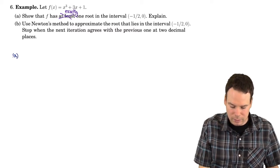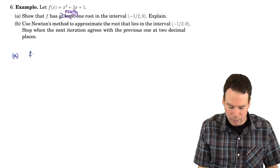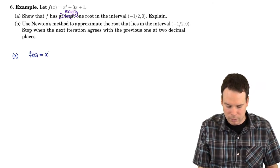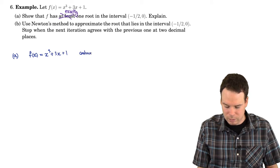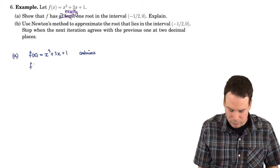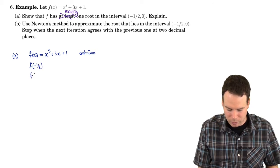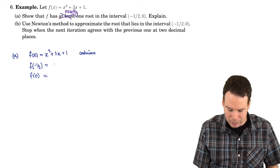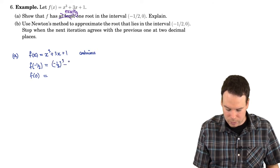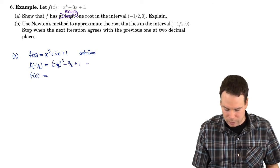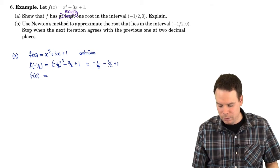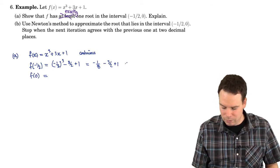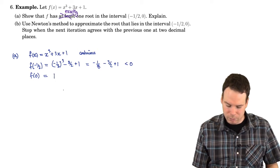So why do we know it has exactly one root in the interval? Well, the function is continuous, and let's look at the function value at the end points. I'm hoping that one of them is positive and one is negative, so I can conclude by the intermediate value theorem that there's a root between them. At negative one-half, that's negative one-eighth minus three-halves plus one, which is negative. At zero, it's one, so that's positive.